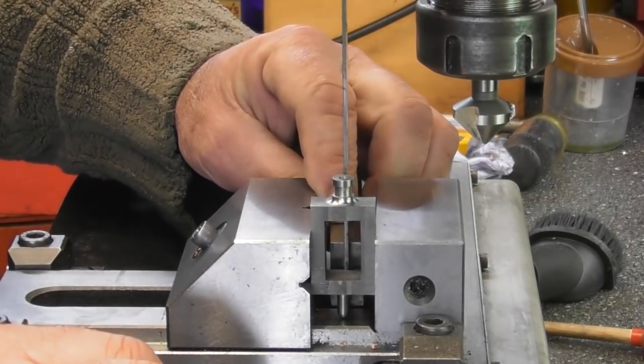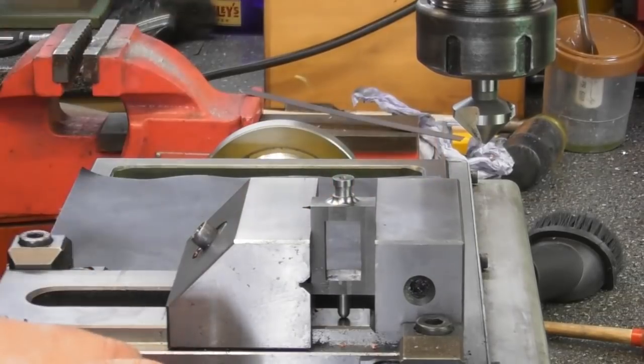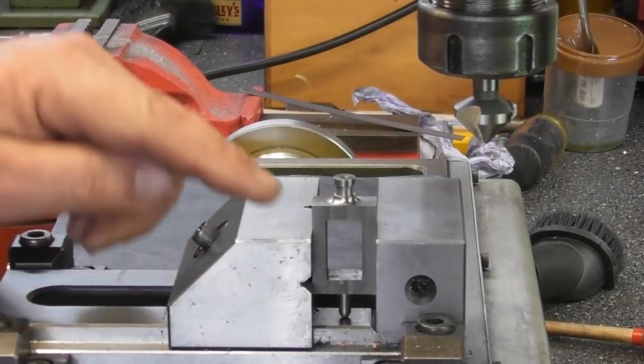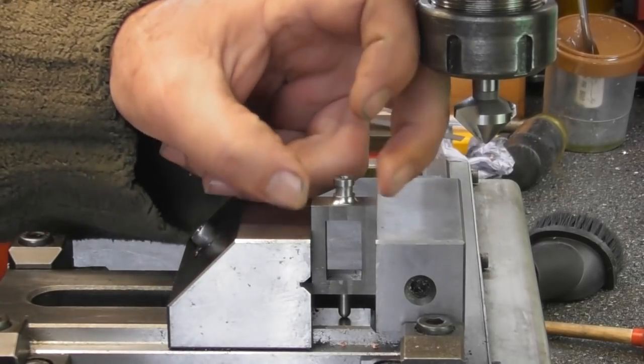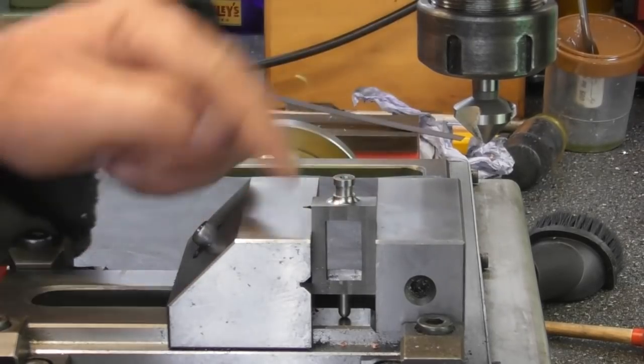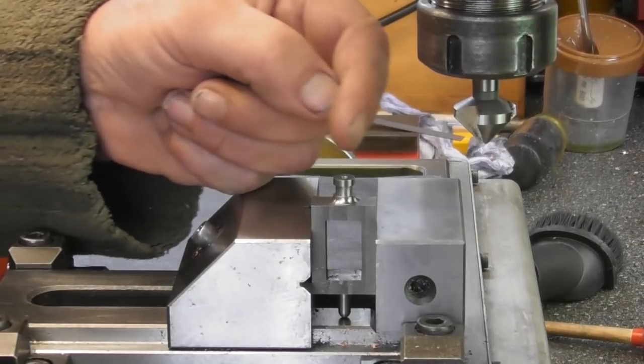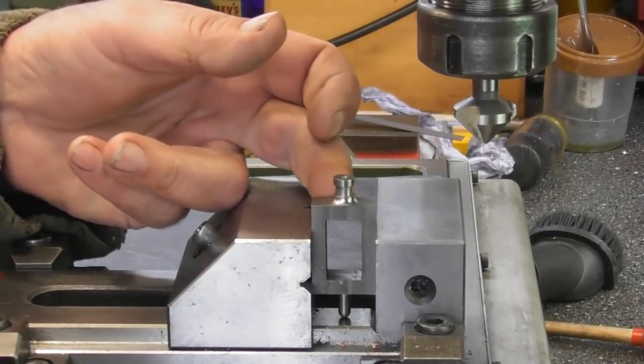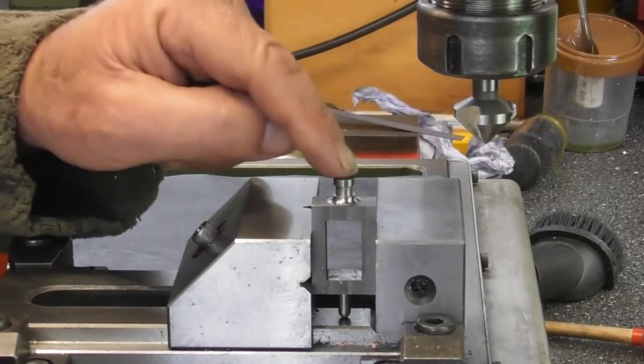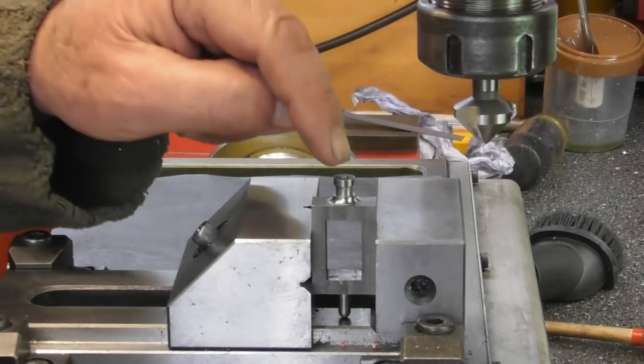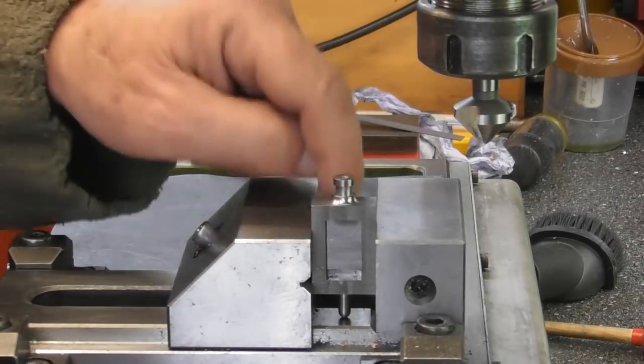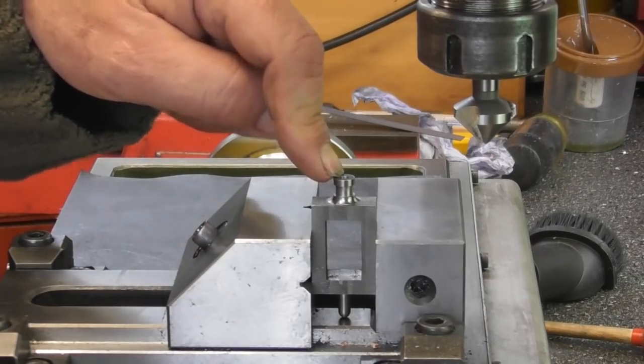So we're back to the mill and I'm going to square it up against my good square. No need to overdo this but just nip it up in the vice so it's tight. I'll just double-check that, yep spot-on. So I'm going to pick up the center as we've done many times before.